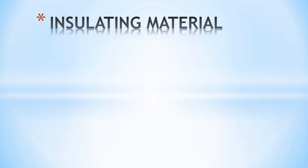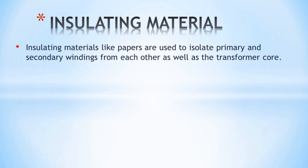The next part is the insulating material. The insulating material is used to isolate the primary and secondary windings from each other.